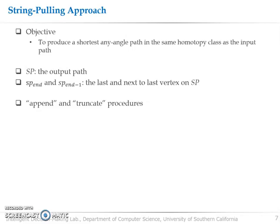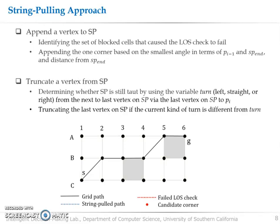So the objective of our string pulling algorithm is to produce the shortest any angle path in the same homotopy class as the input path. We denote the output path as SP, and also we define SP end and SP end minus 1 as the last and next to the last vertex on SP. During each iteration, it either appends a vertex to SP or truncates SP by removing the last vertex on it.